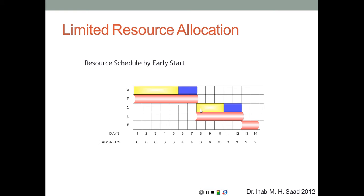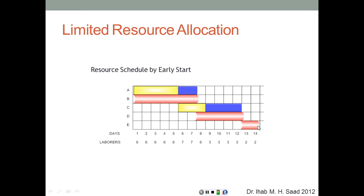After moving activity C, resource peaks disappear and utilization stays within the maximum limit of 6. The project duration remained 14 days — unchanged — so the project finishes on time while meeting all resource constraints.